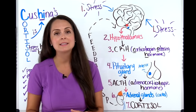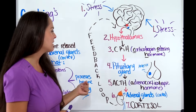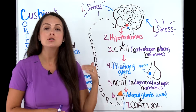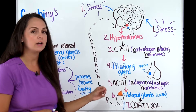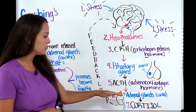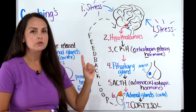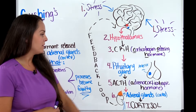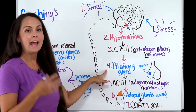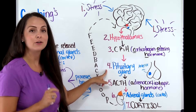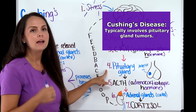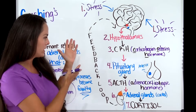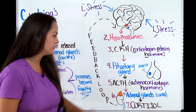However, in this feedback loop we can have some faulty structures. For example, the pituitary gland can have tumors causing it to release way too much ACTH. Too much ACTH causes the adrenal glands to pump out cortisol. In the blood work, you'll see high ACTH and high cortisol — that tells you the problem is coming from the pituitary gland, and that occurs in Cushing's disease, which typically involves pituitary gland tumors.